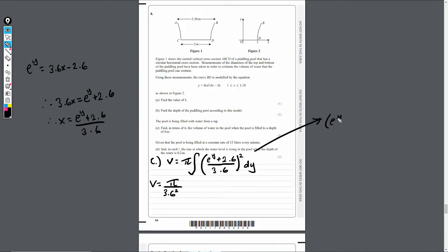Now, what I've also got is (e^y + 2.6)². This is a nice easy double bracket just to expand. If you expand this, what you'll get is e^(2y) plus 5.2 lots of e^y, so 5.2e^y, and then finally you'll get plus 6.76.